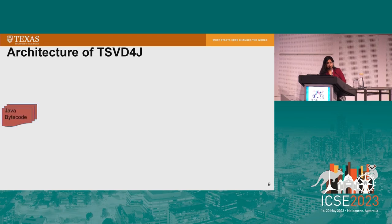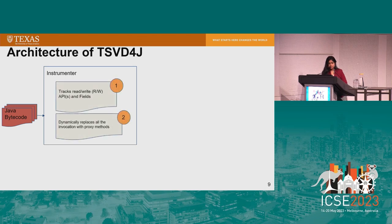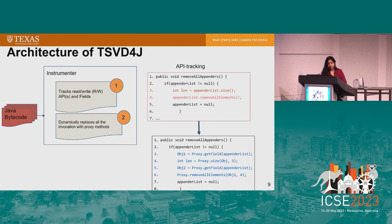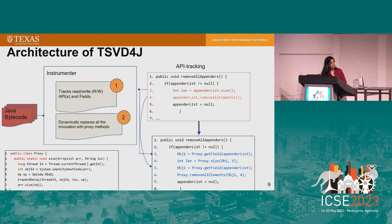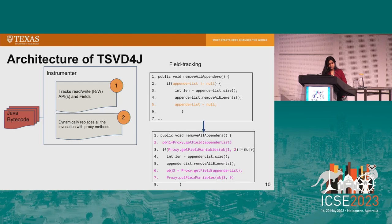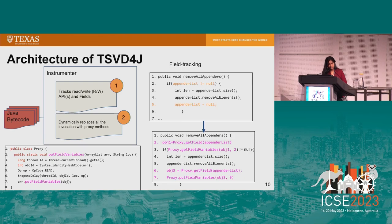In the architecture of TSVD4J, we take Java bytecode as input. The instrumenter tracks all read and write operations and dynamically replaces all invocations with proxy methods. For example, API method calls are converted into proxies that keep track of thread ID, object ID, and operation types. Similarly, we track field accesses by converting code blocks into proxies with the same implementation.